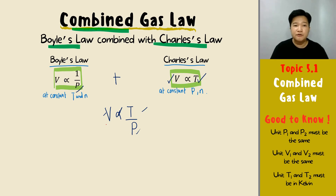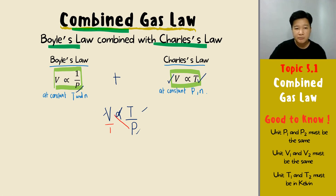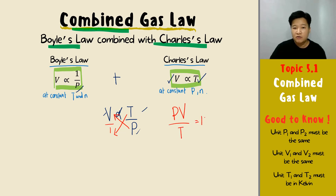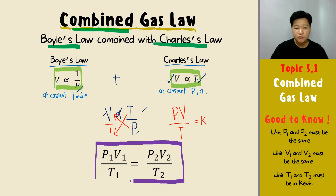To form the formula, we multiply across: pressure times volume, then bring temperature down, giving PV over T equals a constant. That then gives rise to P1V1 over T1 equals P2V2 over T2 — this is your combined gas law formula.